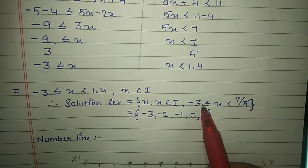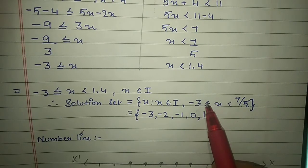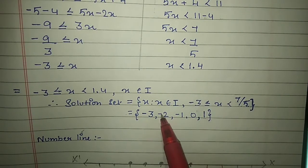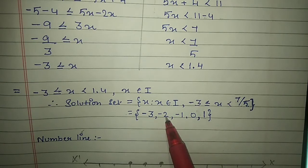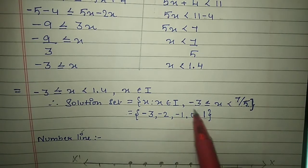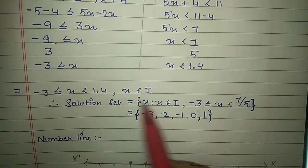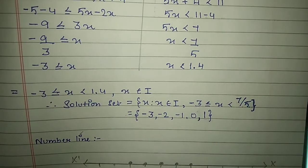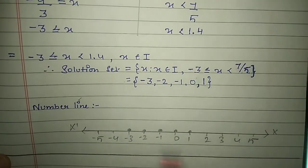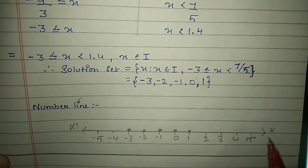The integers in range from minus 3 to before 1.4 are: minus 3, minus 2, minus 1, 0, and 1. We include minus 3 because the equal to symbol is present. Draw the number line and mark these points.